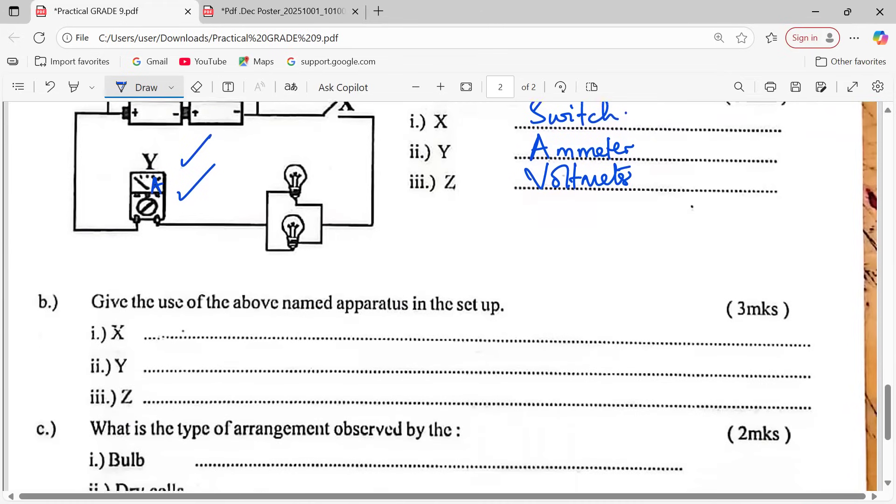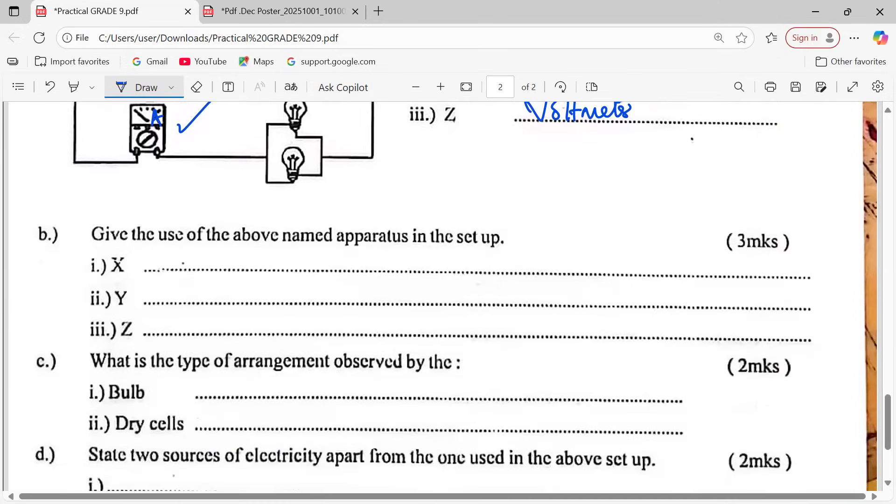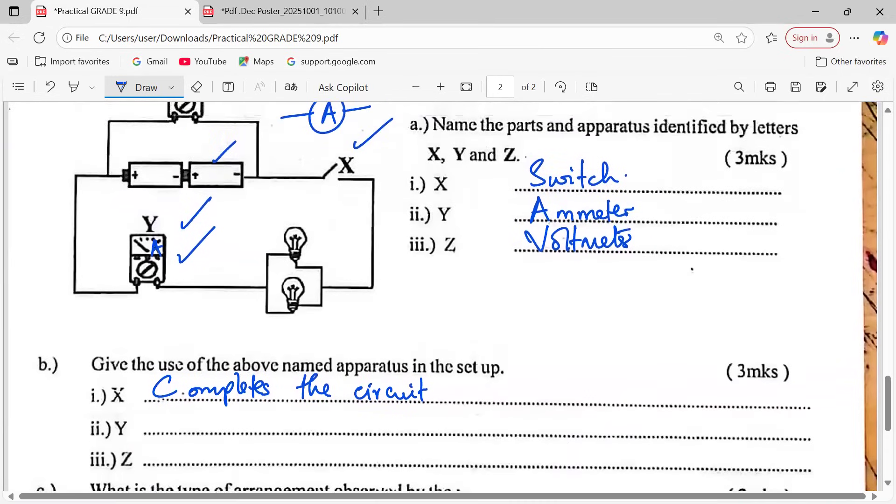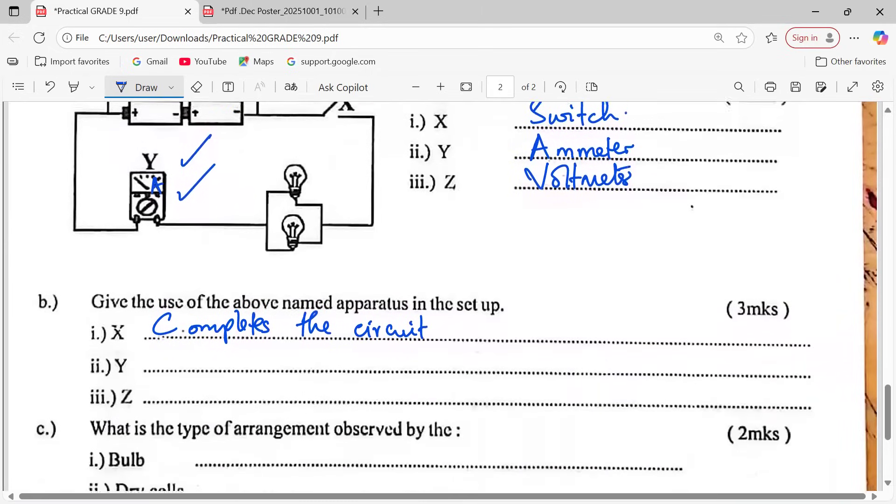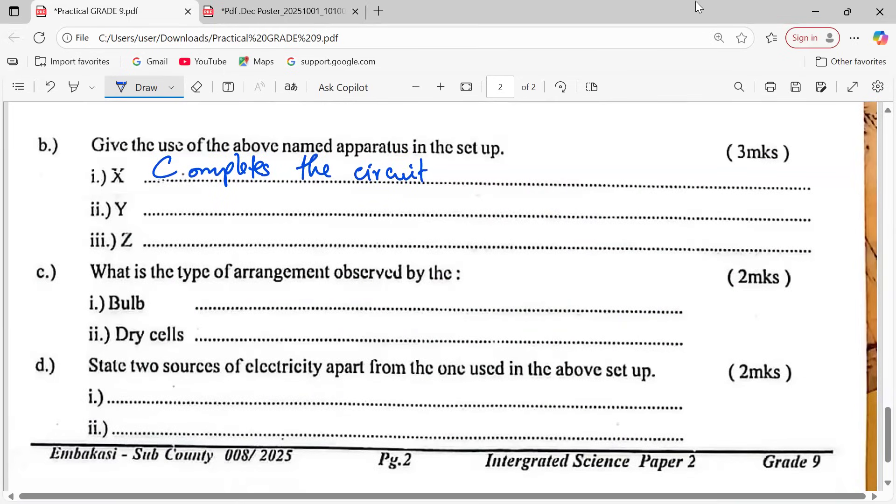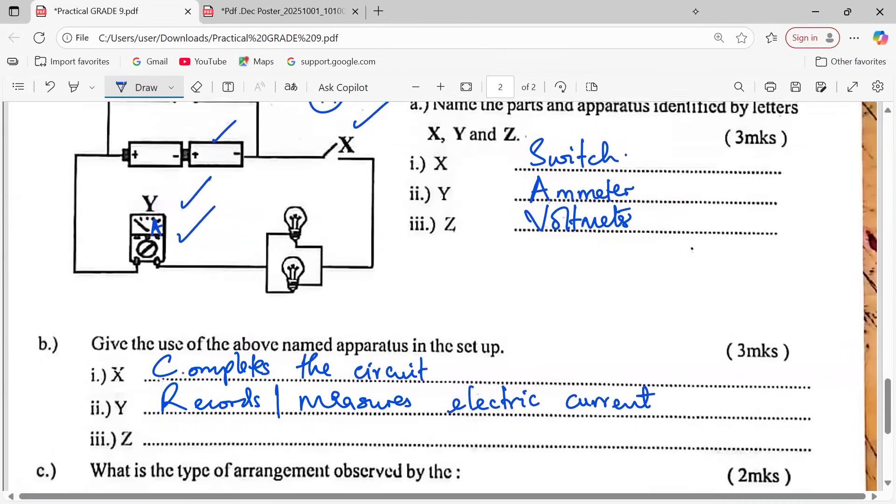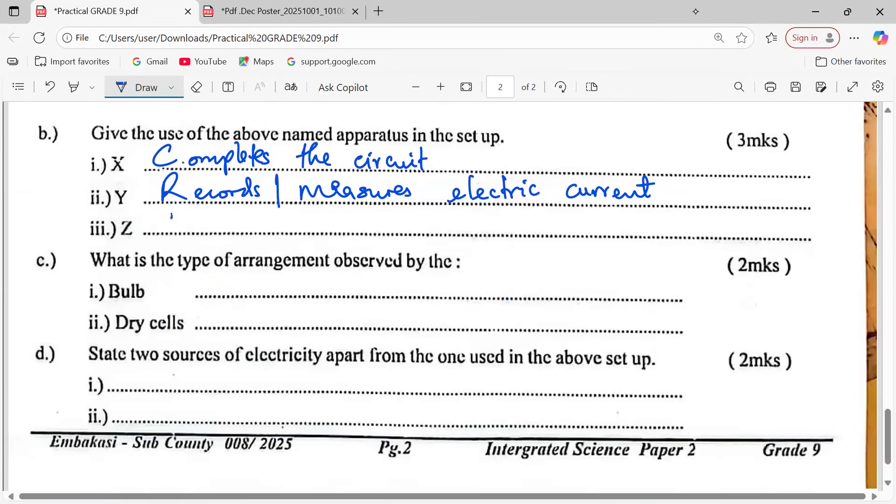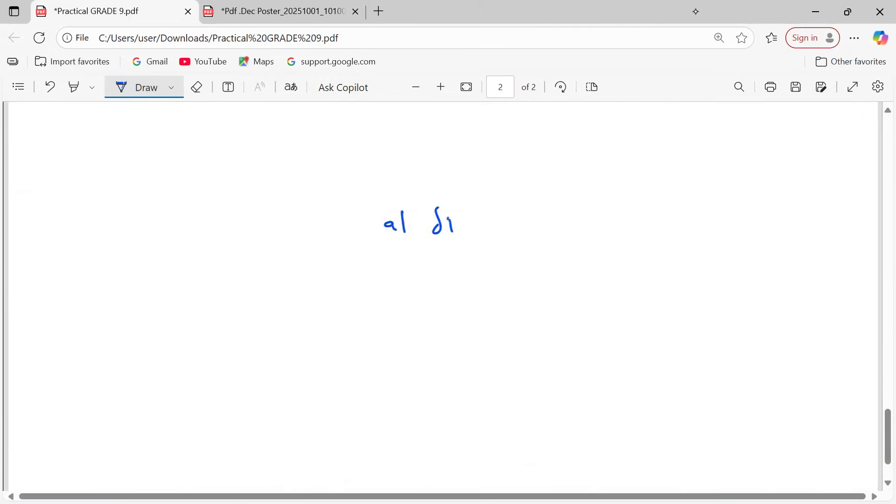Give the use of the above named apparatus in the setup above. X is a switch, so that one completes the circuit. And actually it can also be used for the opposite. When a circuit is complete we will use the switch to disconnect it and make it incomplete. Y, which is the ammeter, that one records electric current. It measures, not even recording, measures electric current. Then the voltmeter, that one measures potential difference, or rather measures voltage. It measures potential difference.